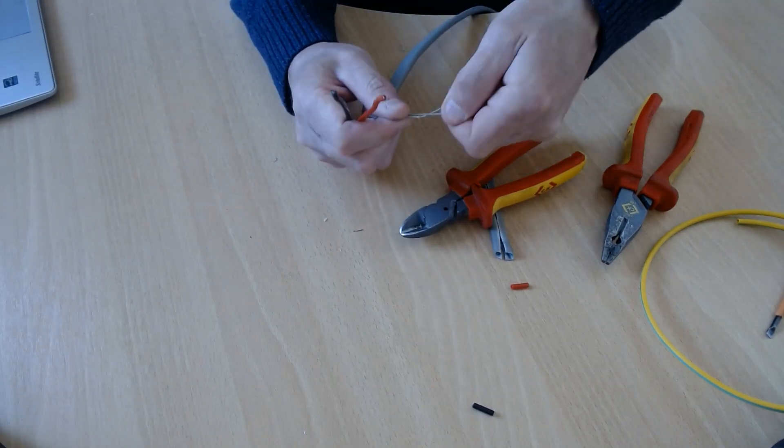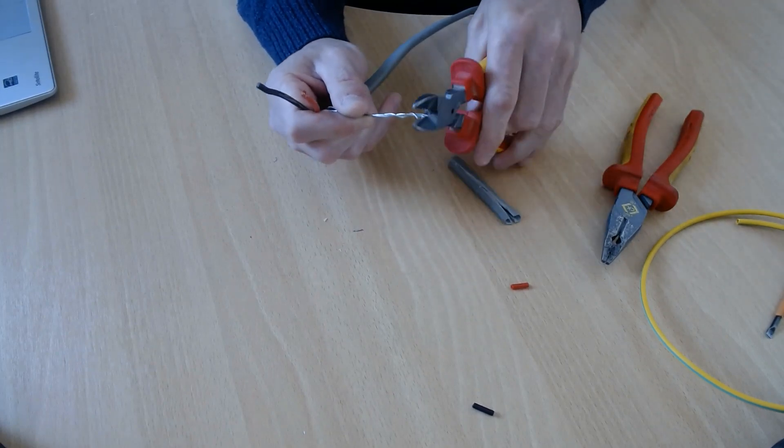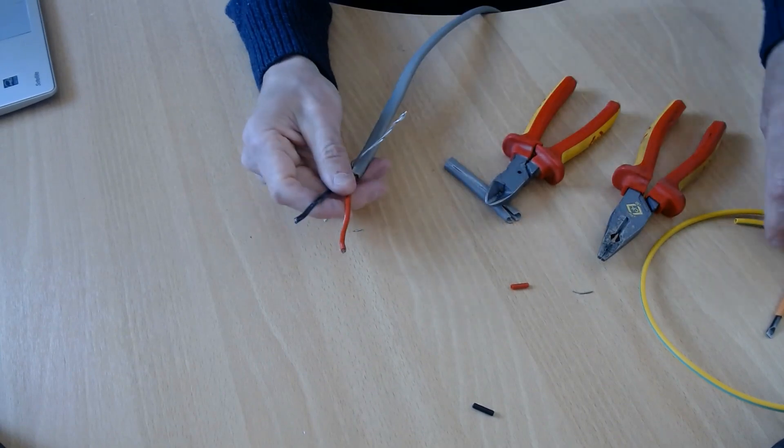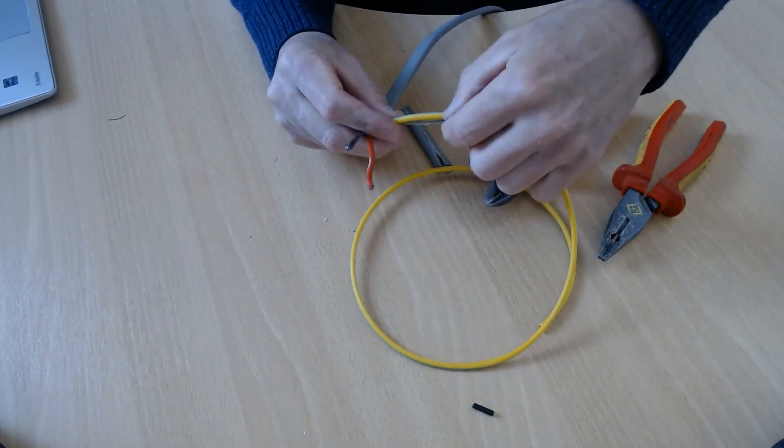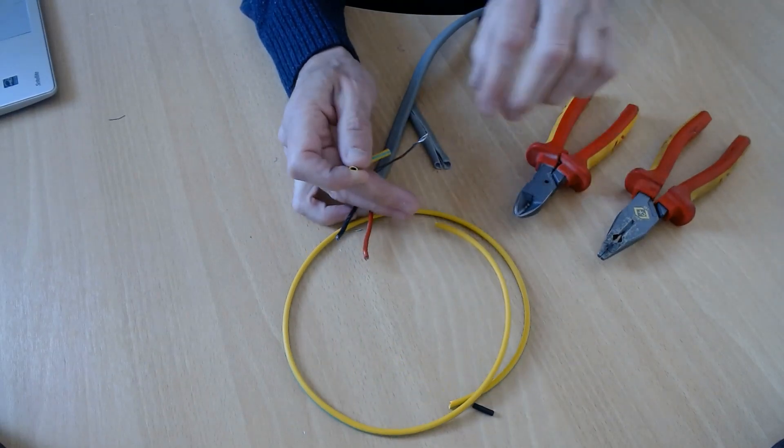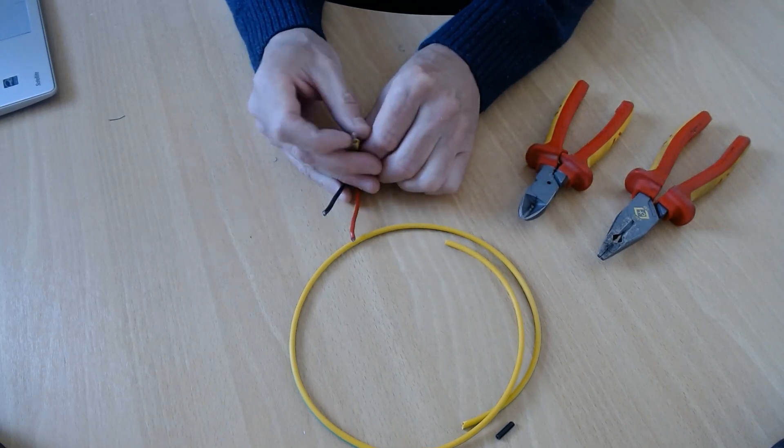Get the earths, twist them together like that. Got a bit of excess, cut there. Get your earth sleeving, measure that earth off again, put that on there.